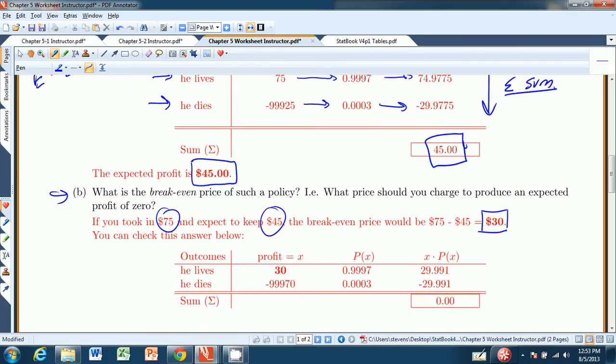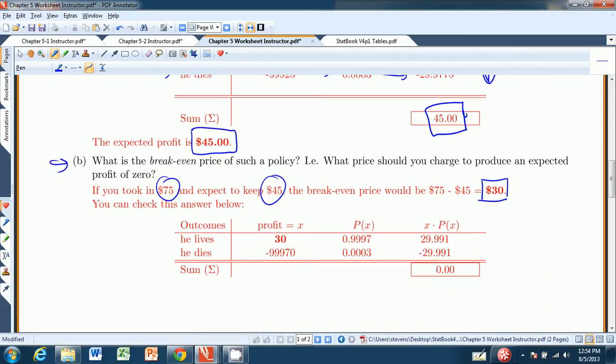And you can check that answer easily by sticking $30 in for the value, for the cost of the policy. So if he lives, you make $30 as the company. If he dies, you lose, you know, take $100,000 minus $30, you get negative $99,970. The probabilities are the same. So X times P of X gives you that third column. X times P of X gives you this column. And they're the same. Well, one's a negative. Important negative. So your expected value is zero. And the breakeven price is indeed $30.